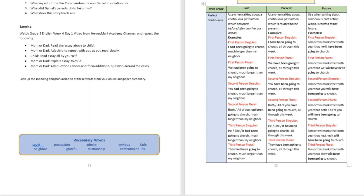The future perfect continuous is used when talking about a continuous past action which can be related to the future. An example: 'Tomorrow marks the tenth year I will have been going to church.' Tomorrow is a future action, but 'I will have been going to church' refers to what has already been happening — you're projecting yourself into the future and talking about what you've done by that point.